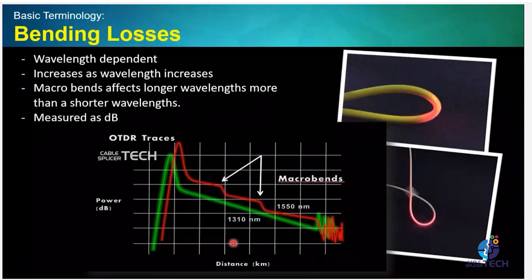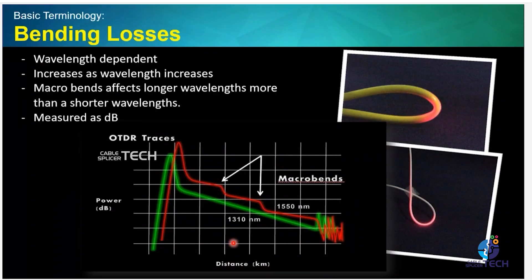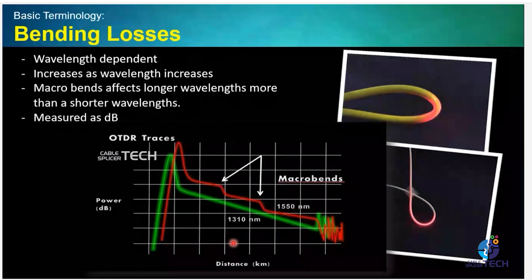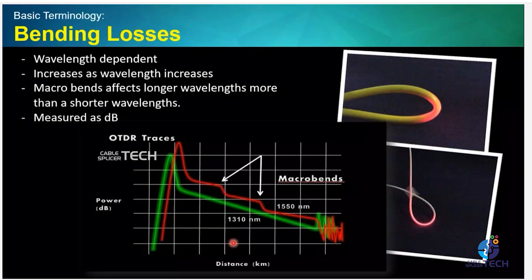If you test only with one wavelength, we say that the testing is not properly done. The reason is that if you do with one wavelength only, then you will not be able to see the effect of the bending.